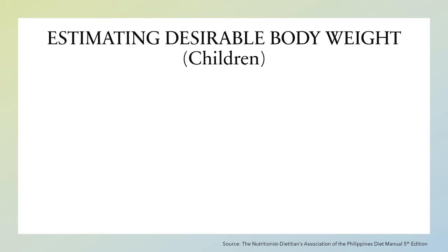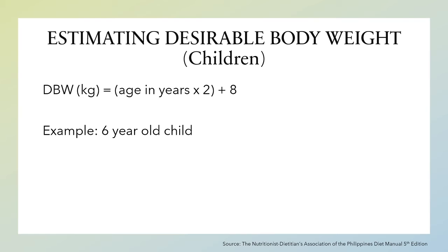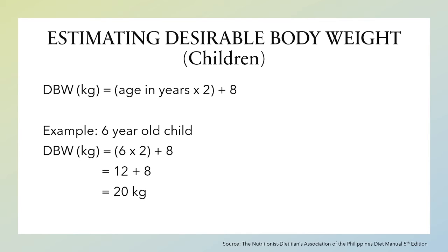Now let us proceed to the calculation of desirable body weight for children. The equation is age in years times 2, plus 8. For example, a 6-year-old child: 6 times 2 plus 8 — 6 times 2 equals 12, and then we add 8, giving us 20 kilograms.